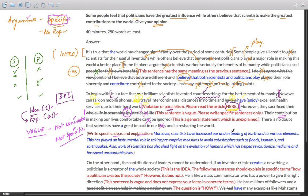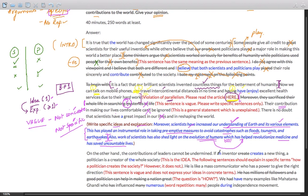So I have tried to write specific ideas and explanation just as a sample. You need not copy my ideas. Moreover, scientists have increased our understanding of the earth and its various elements. This has played an instrumental role in taking preemptive measures to avoid catastrophes such as floods, tsunamis and earthquakes. This is a specific explanation. Scientists have improved the understanding. And how has it helped? In these ways. Also, work of scientists has also shed light on evolution of humans. This is the idea. Now in the same sentence, using a connecting device, which I have explained this idea, which has helped revolutionize medicine and has saved countless lives. So this is an explanation. Evolution of humans, we have understood. And how has it helped? It has helped in these ways. I hope you've understood how the things need to proceed.